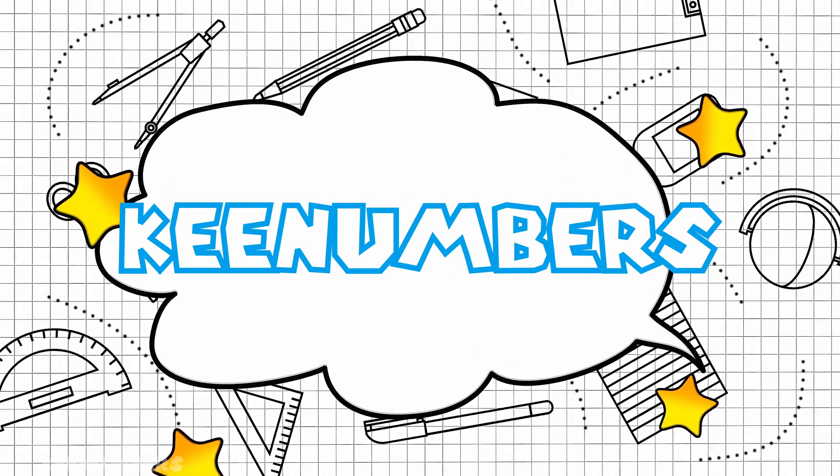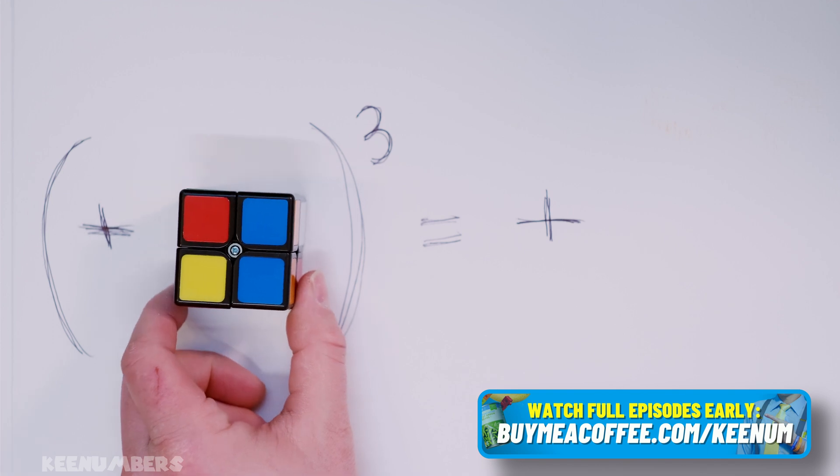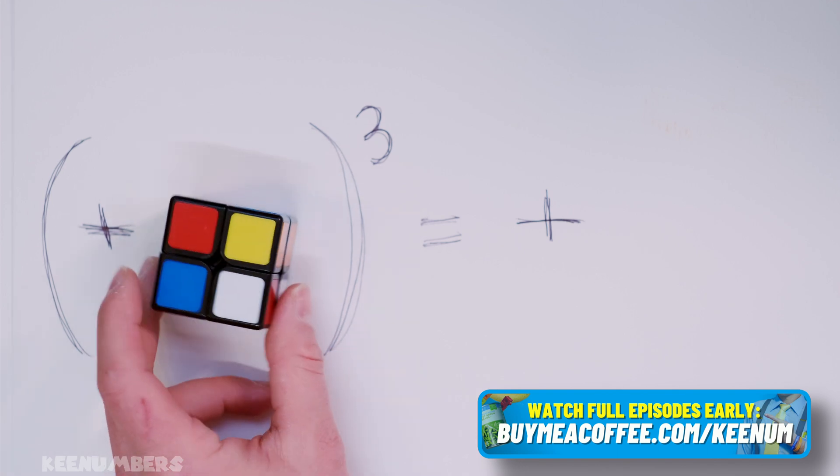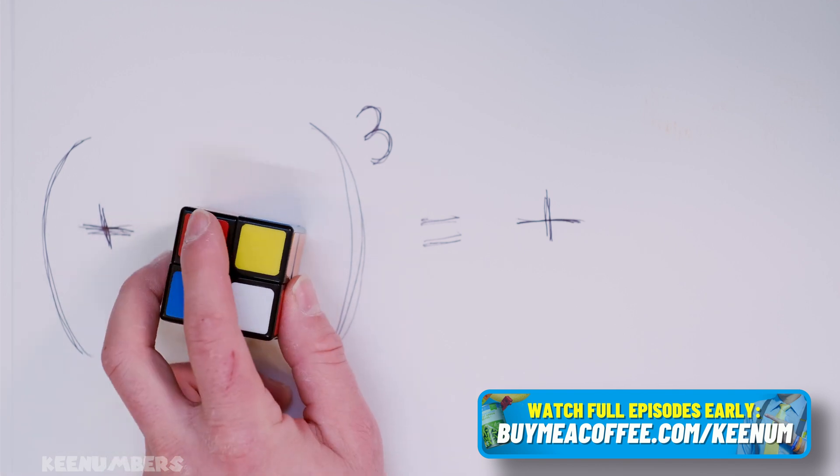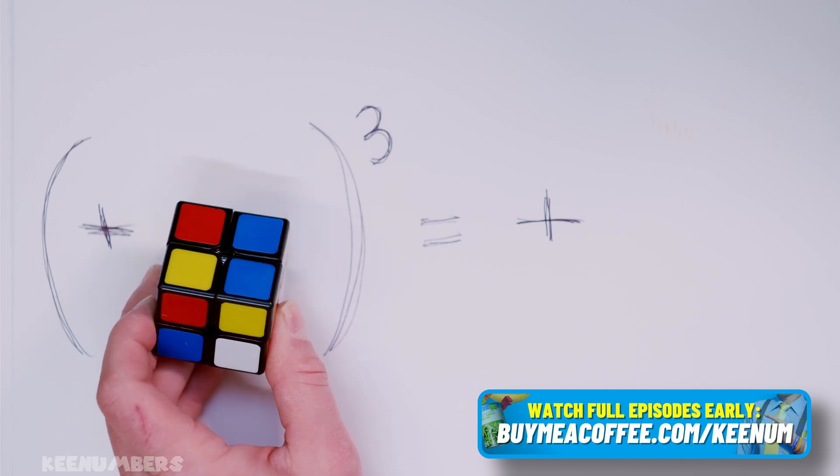Welcome to the bonus section. Let's look at two cubed. Here we have two by two by two.